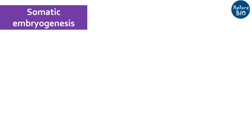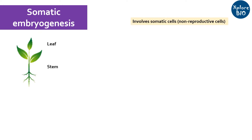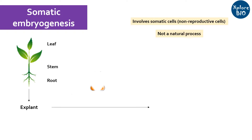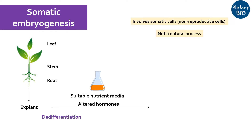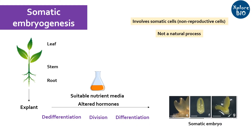Coming on to somatic embryogenesis. In contrast to a zygotic embryo, a somatic embryo is derived from any type of somatic cells. It can be a leaf, stem, or root tissue, but preferably it should be a juvenile one. Somatic embryogenesis is not a natural process as somatic cells do not form embryos naturally. However, artificially you can induce somatic cells by altering the hormonal composition in plant tissue culture to de-differentiate the explant to totipotent stem cells, which divide and re-differentiate to give rise to a somatic embryo. This embryo can be used to regenerate a whole plant.